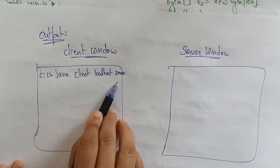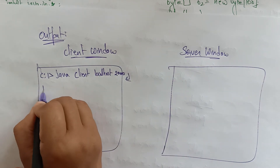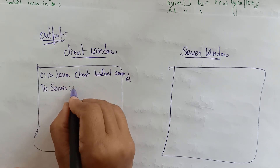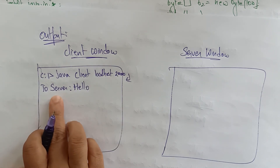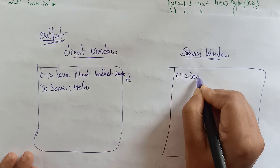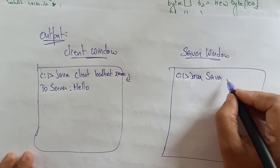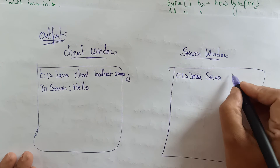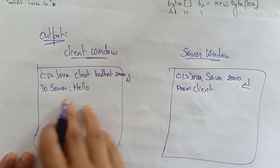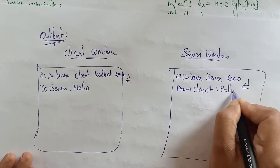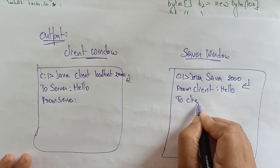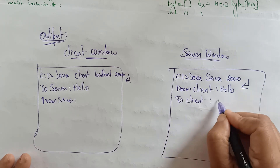After pressing Enter in the client window, the message 'To server:' appears. Type 'hello' from the keyboard. In the server window, run: java Server 2000 — no address needed, only port 2000. The message sent from the client — 'hello' — will appear in the server window as 'From client: hello'. Then the server prompt shows 'To client:' for the server to send a reply.